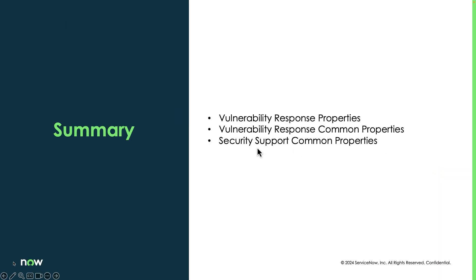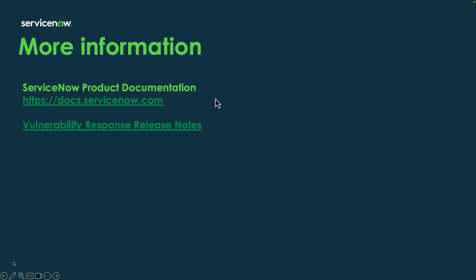In summary, we've learned today about some of the core vulnerability response system properties within each of these applications — vulnerability response, vulnerability response common, and security support common. System properties are not generally listed in one document; they're usually spread within the release notes as new properties continue to be released. Your best place to go is the doc site or the table I showed in the demo — go through all those properties, as many have descriptions telling you exactly what they're used for. I appreciate your time today and have a good day.